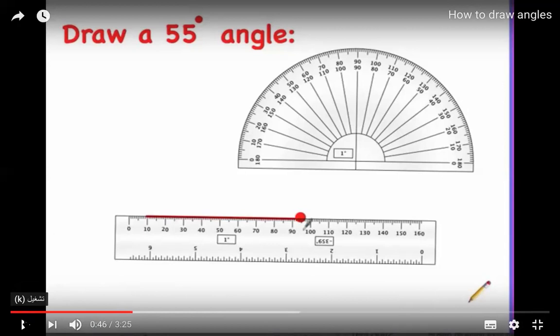It's the same process: draw a point, then draw a ray from it. You can draw the ray going to the left or to the right — you can decide by yourself.